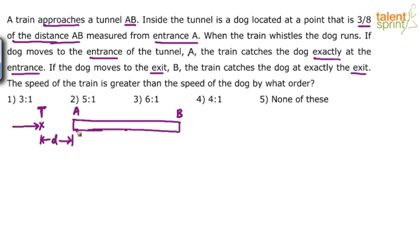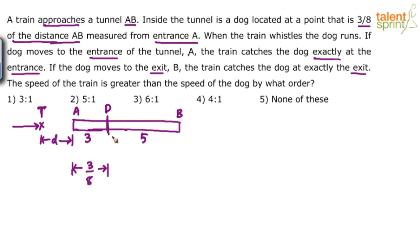The dog is at 3/8 of the distance AB. If we divide the total distance AB into 8 parts, the dog will be at 3 parts from the entrance and 5 parts from the exit. This is the dog's position. So if this is 3 parts, then this is 5 parts. The dog is at 3/8 of the total distance — 3 parts from the entrance and 5 parts from the exit out of 8 total parts.